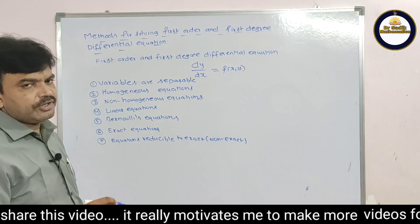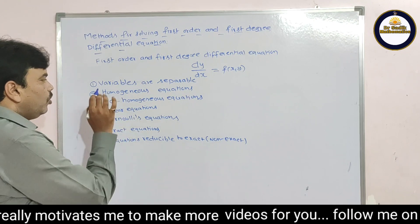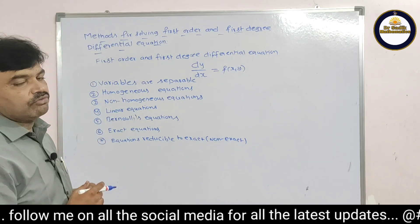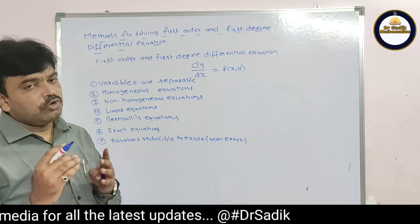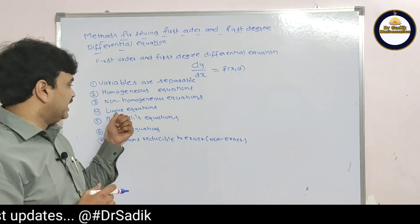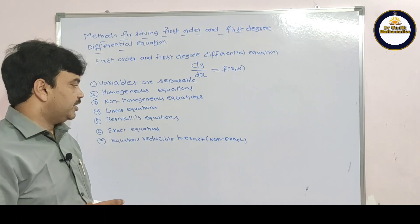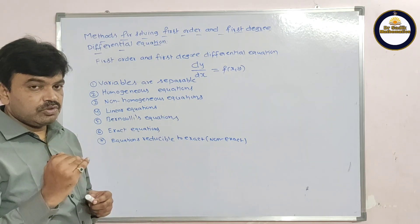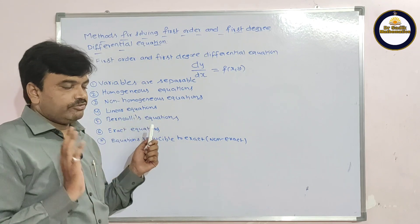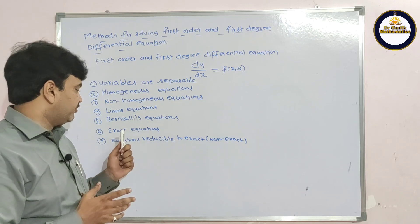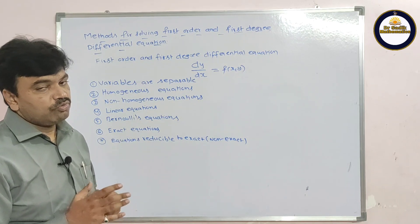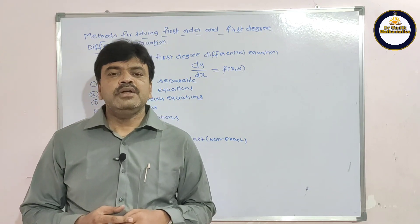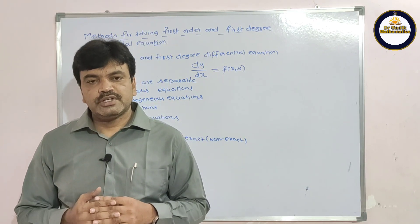The methods for solving first order first degree differential equations are: (1) Variables Separable, (2) Homogeneous Equations, (3) Non-homogeneous equations (reducible to homogeneous), (4) Linear Equations, (5) Bernoulli's Equation (also called non-linear or reducible to linear), (6) Exact Equations, and (7) Equations reducible to exact (non-exact equations). Thank you for watching this video.